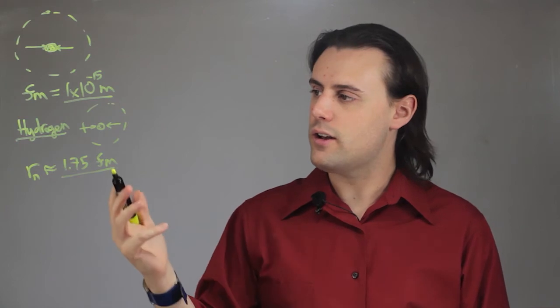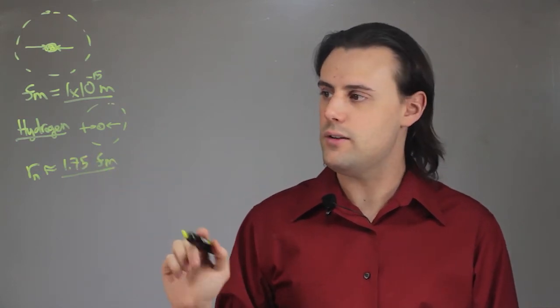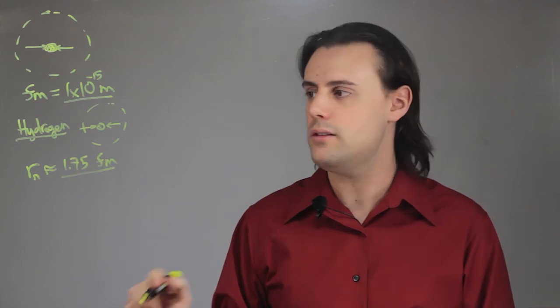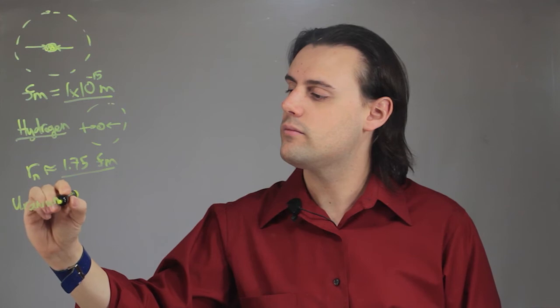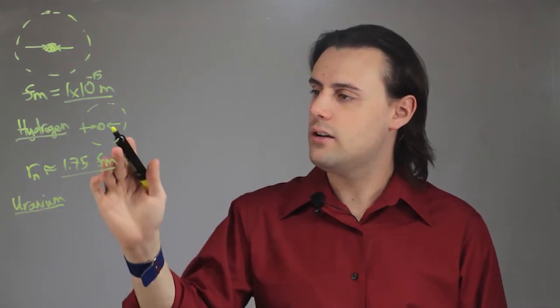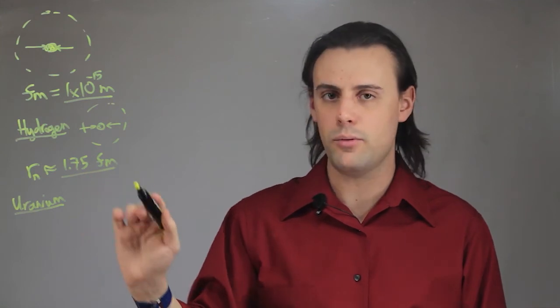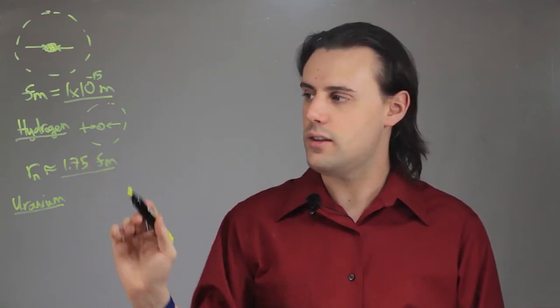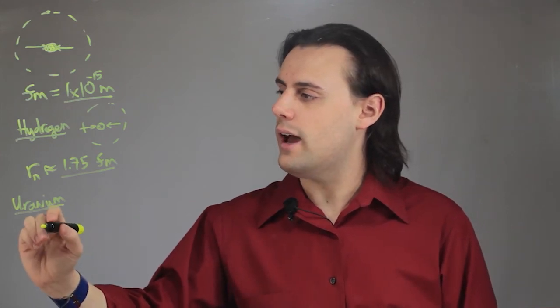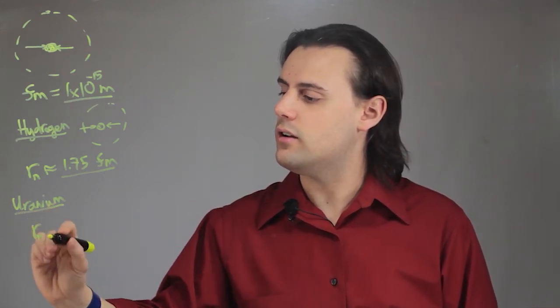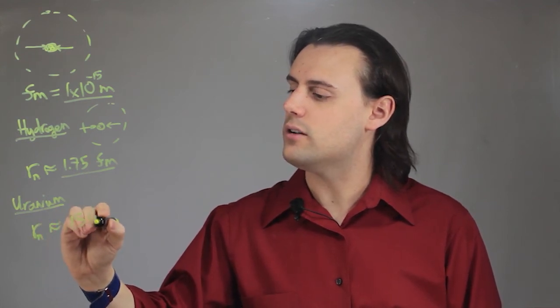And if we contrast this with one of the heavier elements, one of the heaviest in the periodic table of elements, such as uranium, uranium has a nucleus that has a size approximately 8.6 times larger than that of hydrogen. So uranium will have a nuclear size of approximately 15 femtometers.